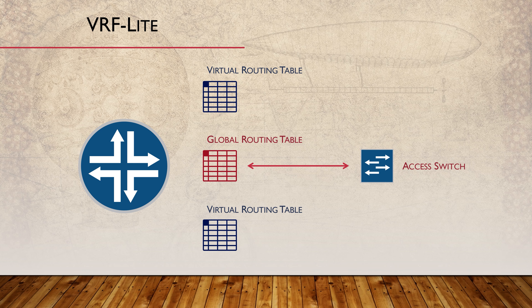We have an enterprise network which consists of servers, workstations, printers, and other devices. We also have a need for an additional network for third parties to install their equipment on — maybe to install monitoring systems for air conditioning, solar power, or something like that. We decide this network should be entirely separate from our regular network for security reasons. Rather than buying all new routers and switches, we can use features like VLANs and VRF Lite. VLANs separate traffic at layer 2 by creating virtual LANs, and VRF Lite separates traffic at layer 3 by creating virtual routing tables.